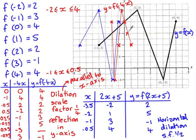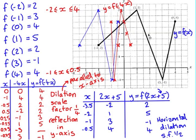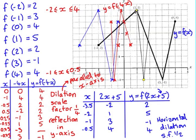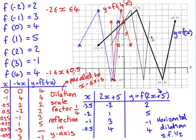The function is half as wide as the original. Before the horizontal dilation was applied, the function translated to the left 5 units — the order here is important. If we take the original function and dilate it by a scale factor of a half, every point is half as far from the y-axis. So the point at 4, 4 is now at 2, 4; the point at 3, negative 1 is now at 1.5, negative 1; the point at 1, 5 is now at 0.5, 5; and the point at negative 2, 2 is now at negative 1, 2. That's what the function looks like after applying a horizontal dilation of scale factor a half.